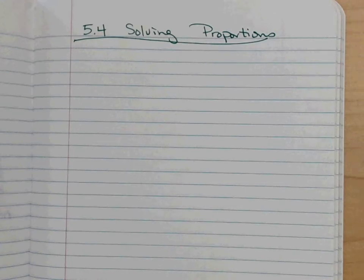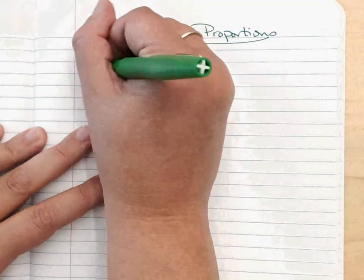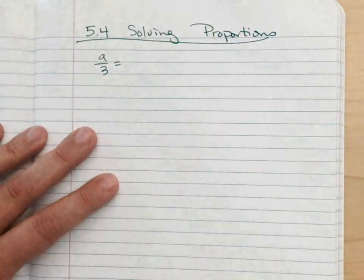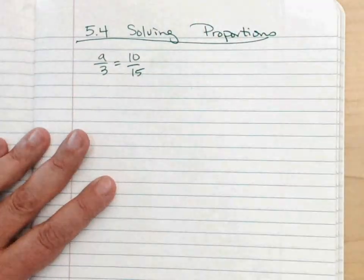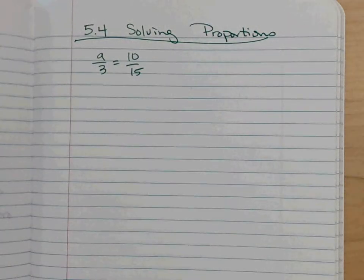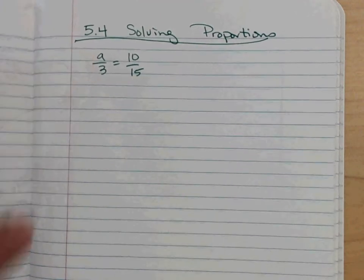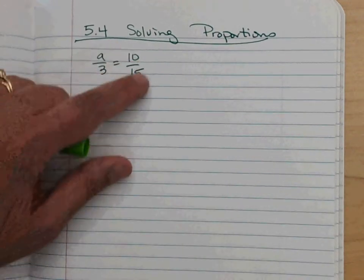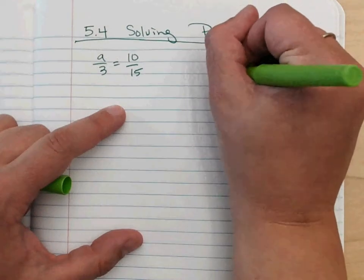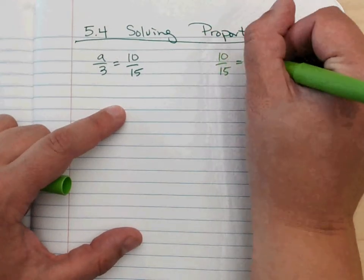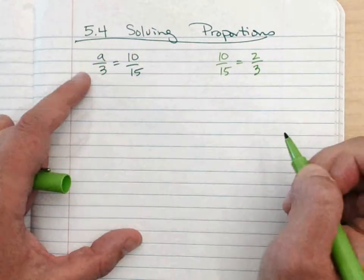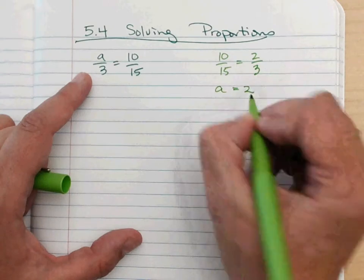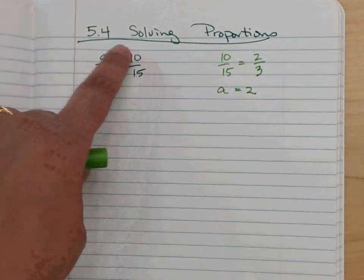So if I had the proportion A over 3 equals 10 over 15. Now remember proportions are just equivalent fractions. This time I don't know what the numerator on the A is, although you might be able to see that if I reduced the fraction 10/15, 5 would go into either one and that would reduce down to 2/3, which shows me that A has to be equal to 2. That's the number that would give me an equivalent fraction here.